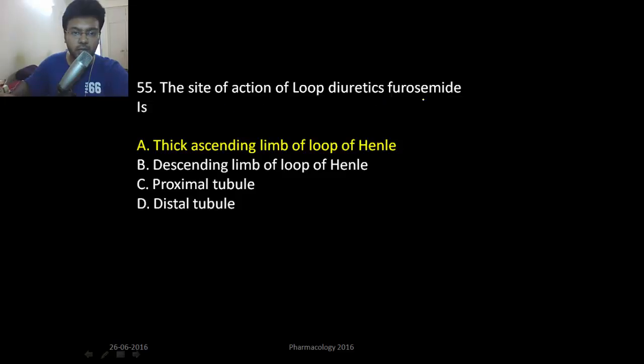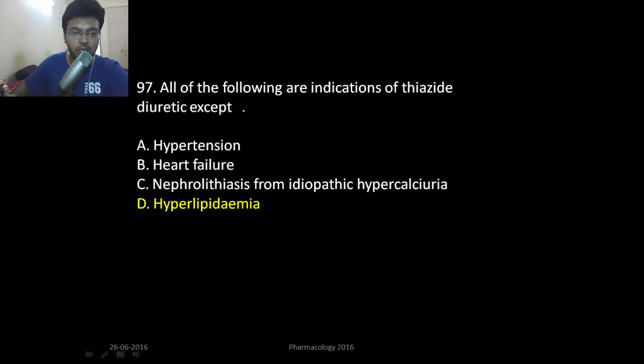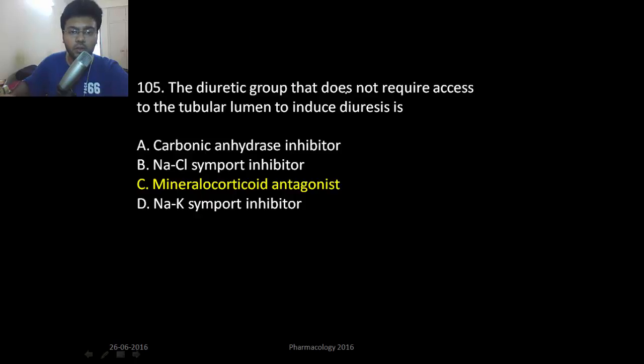The site of action of loop diuretics is thick ascending loop of Henle. Although the following are indications of thiazide except hyperlipidemia - it causes hyperlipidemia. The diuretic group that does not require access to the tubular lumen is the spironolactone that works on the cytosolic receptor. It does not require lumen. That's the mineralocorticoid antagonist.